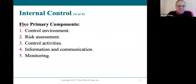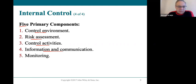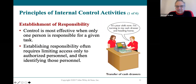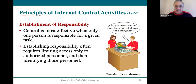There are five primary components of internal control: the control environment, risk assessment, control activities, how everything is communicated to employees, and whether the business is monitoring how all those things are going. There are very specific principles that you might recognize, especially if you've worked in a retail environment — you've probably seen these controls in place.